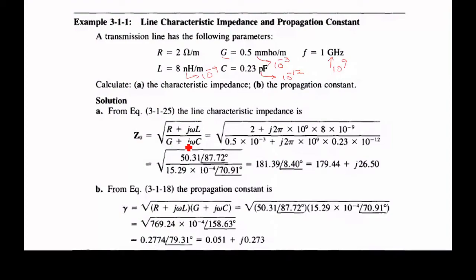The formula is pi divided by g plus j omega c. The R value is given as 2 ohms, so it is substituted as 2 plus j omega, where omega means 2 pi f. So 2 pi into f means 10 power 1 gigahertz. 1 gigahertz means 10 power 9. Then the L value is given as 8 nanohenry per meter, and nano means 10 power minus 9.